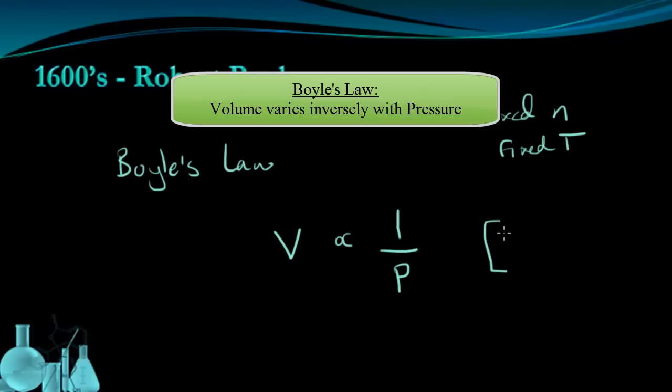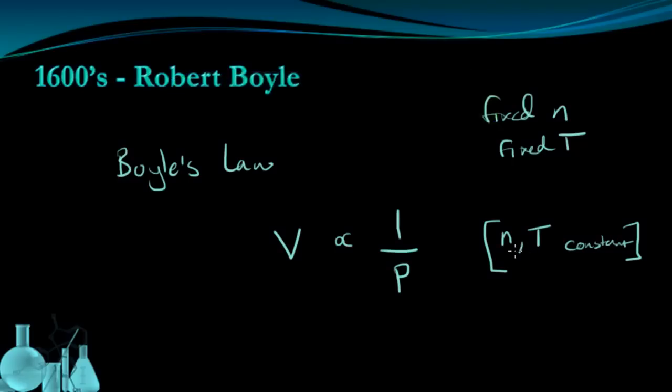And for this relationship, the number of moles and the temperature are held constant. So n is the number of moles, which essentially tells us that the mass of the gas is fixed. If we're keeping the number of moles the same, the mass has to stay the same. And the temperature is held constant. And then this expression tells us that the volume varies inversely with the pressure.